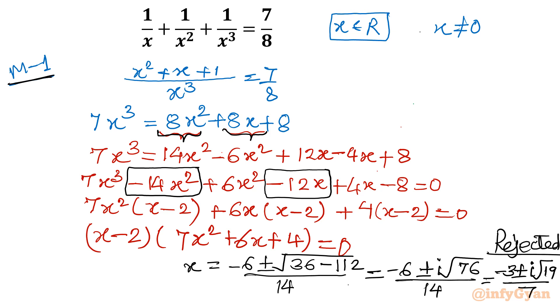So this will be rejected. This solution is rejected. So only one solution is there, real solution is there, that is x is equal to 2.